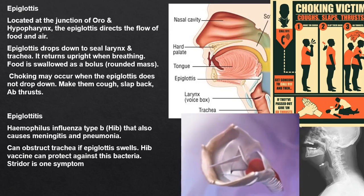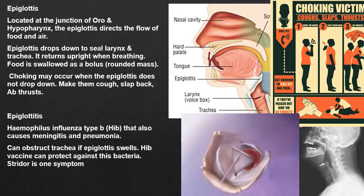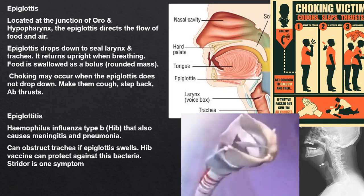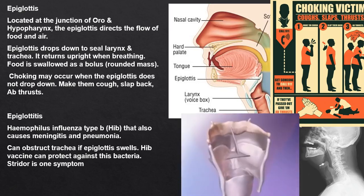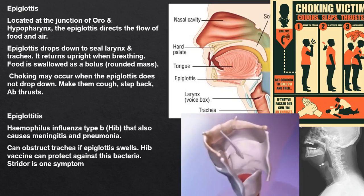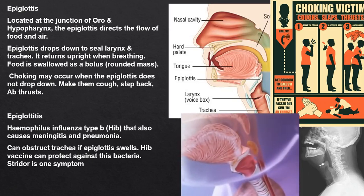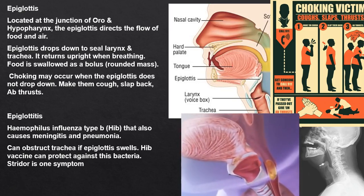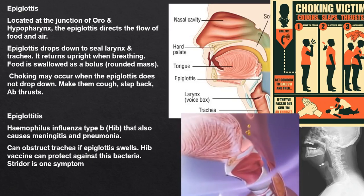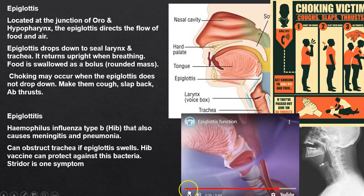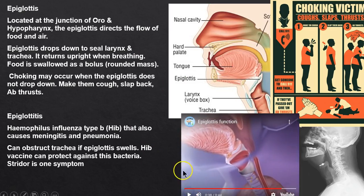The epiglottis flaps down and covers the trachea. But the problem is sometimes people are talking and eating at the same time, and the epiglottis gets confused — that bolus ends up going in the wrong place, down the trachea. You've got to respect your epiglottis.